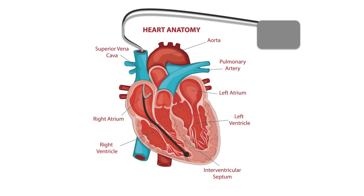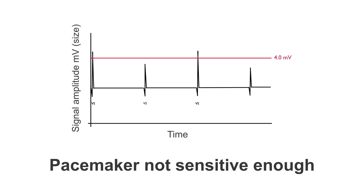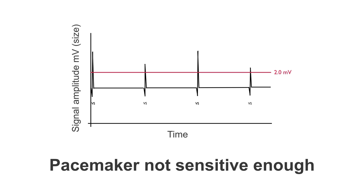So what is happening? Well, for whatever reason, the pacemaker is not sensing the ventricular activity. This is quite often because the ventricular signal has become too small in amplitude. Here we can see that the pacemaker's sensitivity is set at 4 millivolts, and therefore it is ignoring these ventricular events which are less than 4 millivolts in amplitude. If this was the case, we could resolve this by making the pacemaker more sensitive, and once more we are detecting all these ventricular events and normal service is resumed.